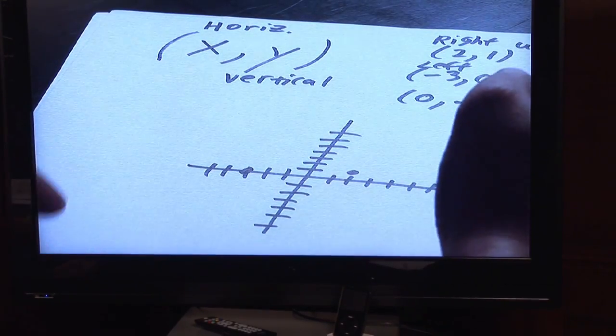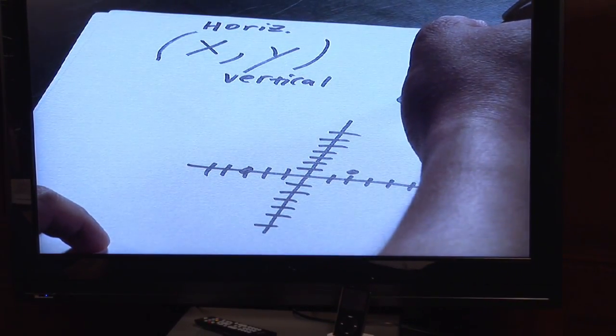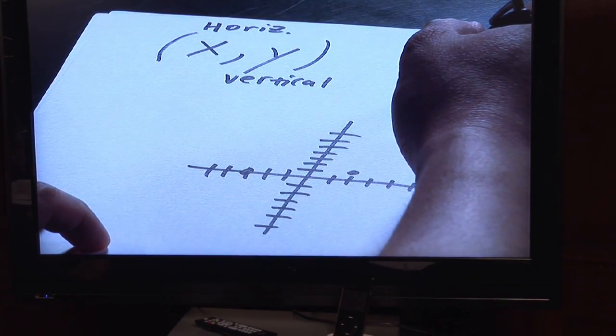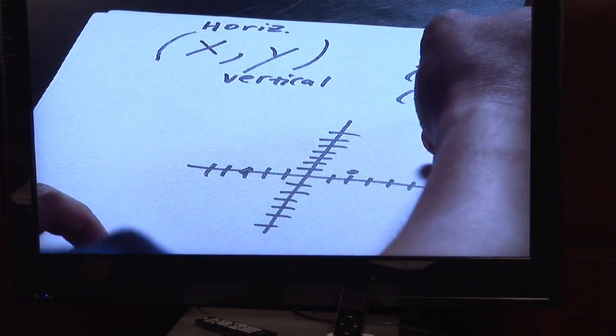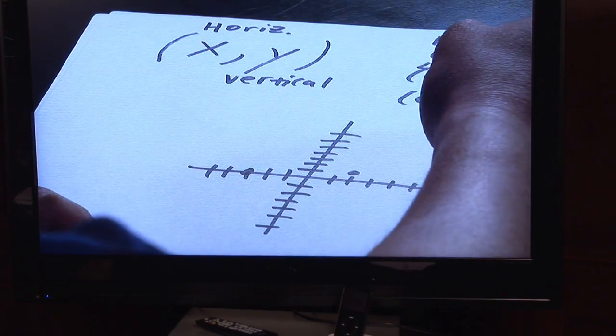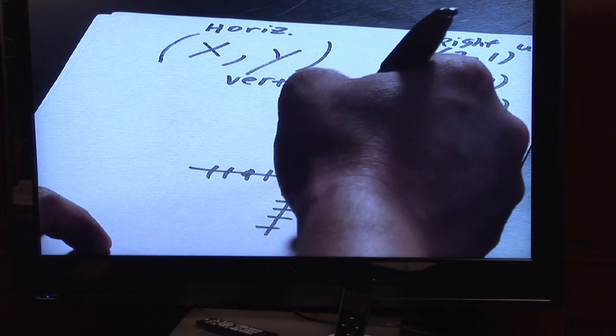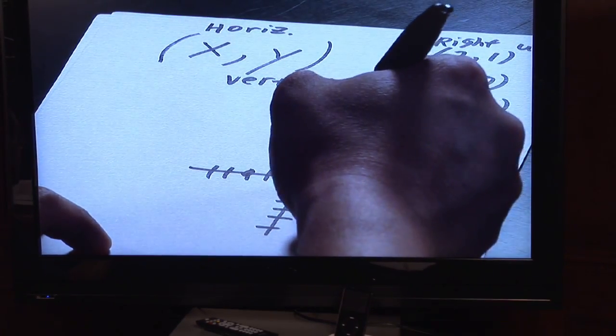For zero, negative one, zero means for the X you don't go horizontally, you don't go left or right, you just stay put for the time being. But the negative one tells you to go down one place. So from the center, just do exactly as I just mentioned, go down.